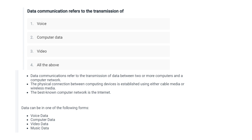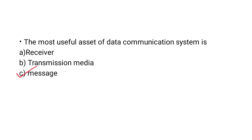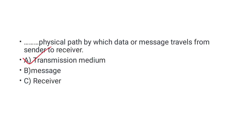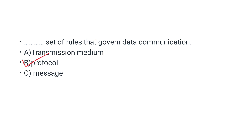Data communication refers to transmission of audio, computer data, and video — the answer is D, all of the above. The most useful asset of a data communication system is the message. The sender plays the part of source. The physical path by which data travels from sender to receiver is the transmission medium. The set of rules that govern data communication is called the protocol.